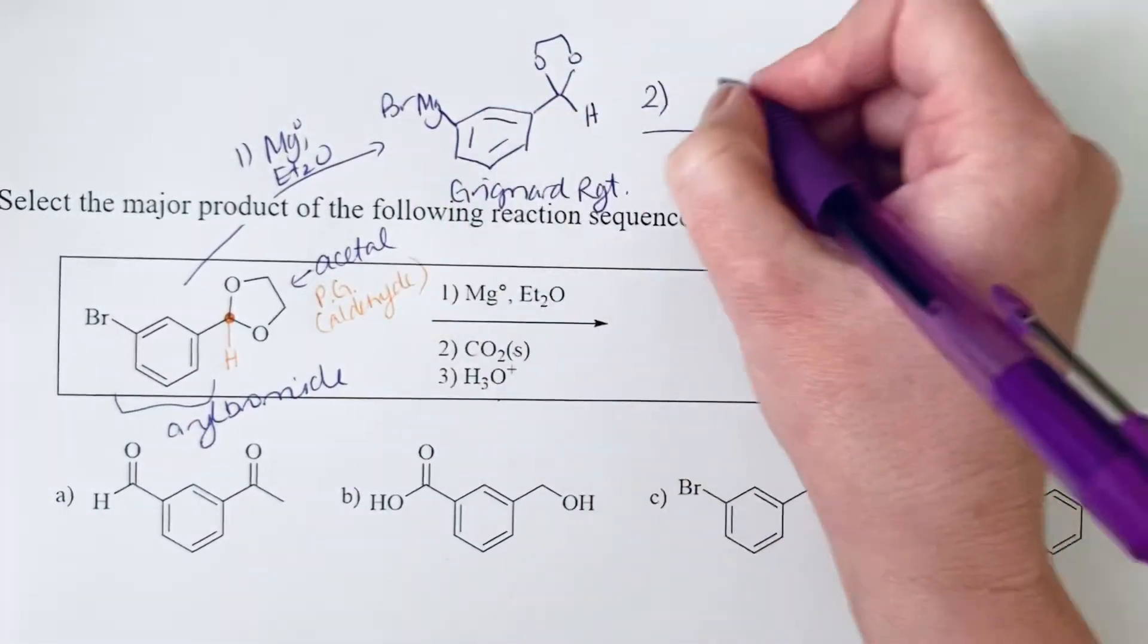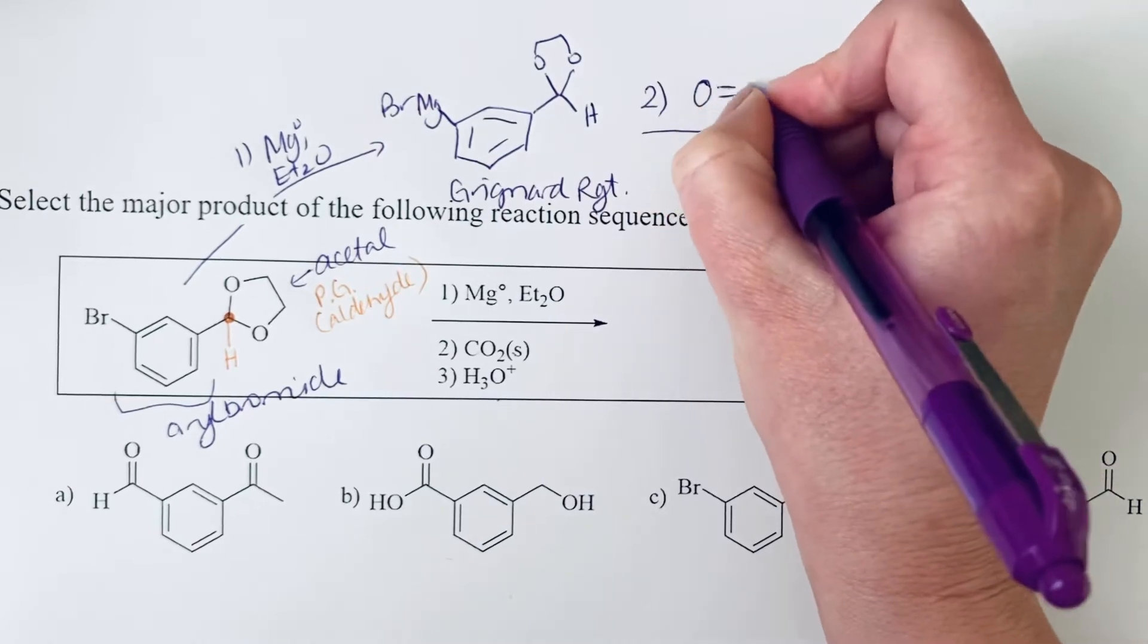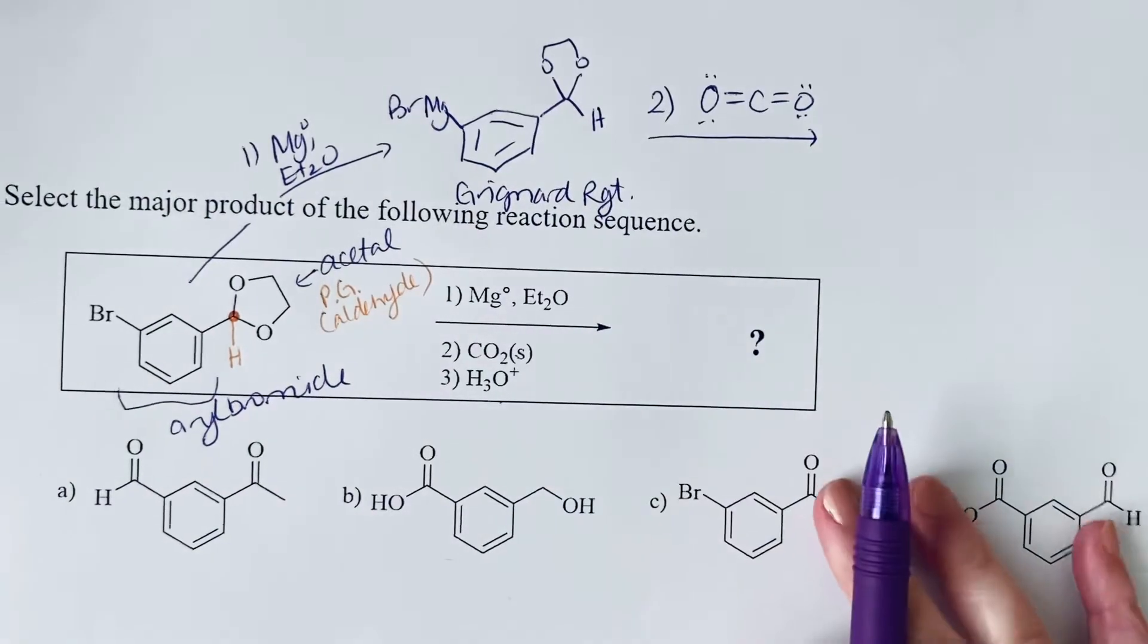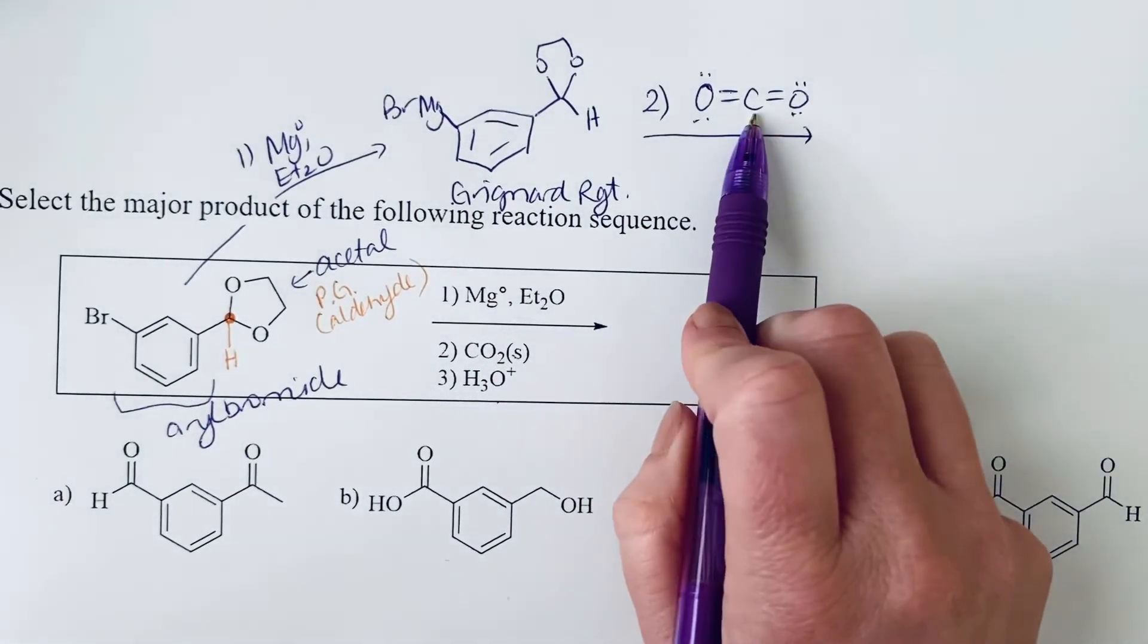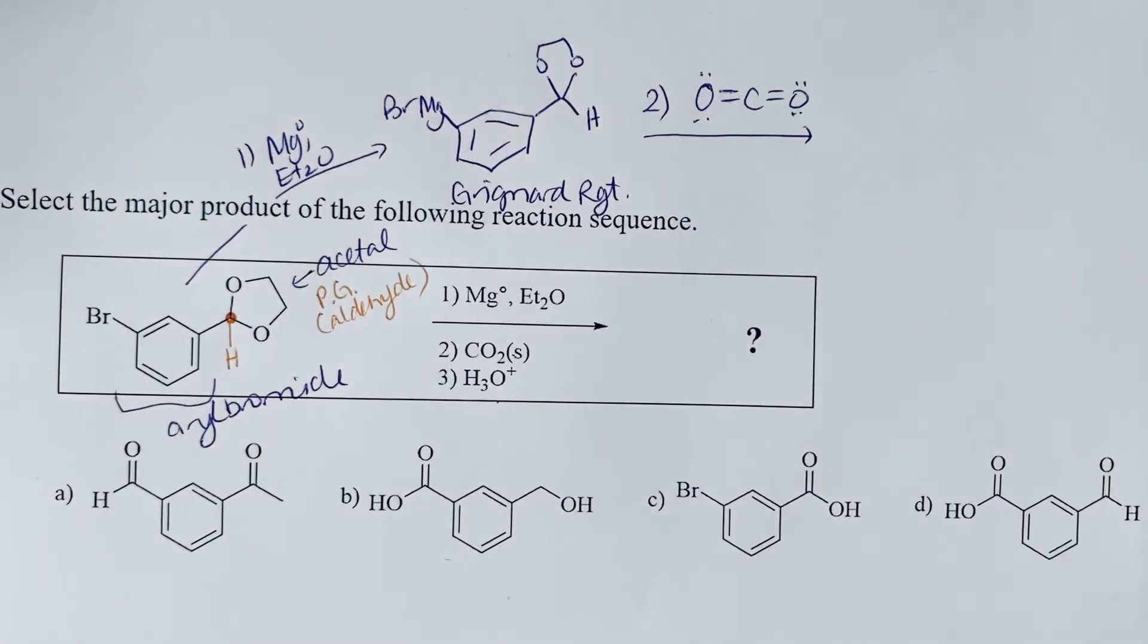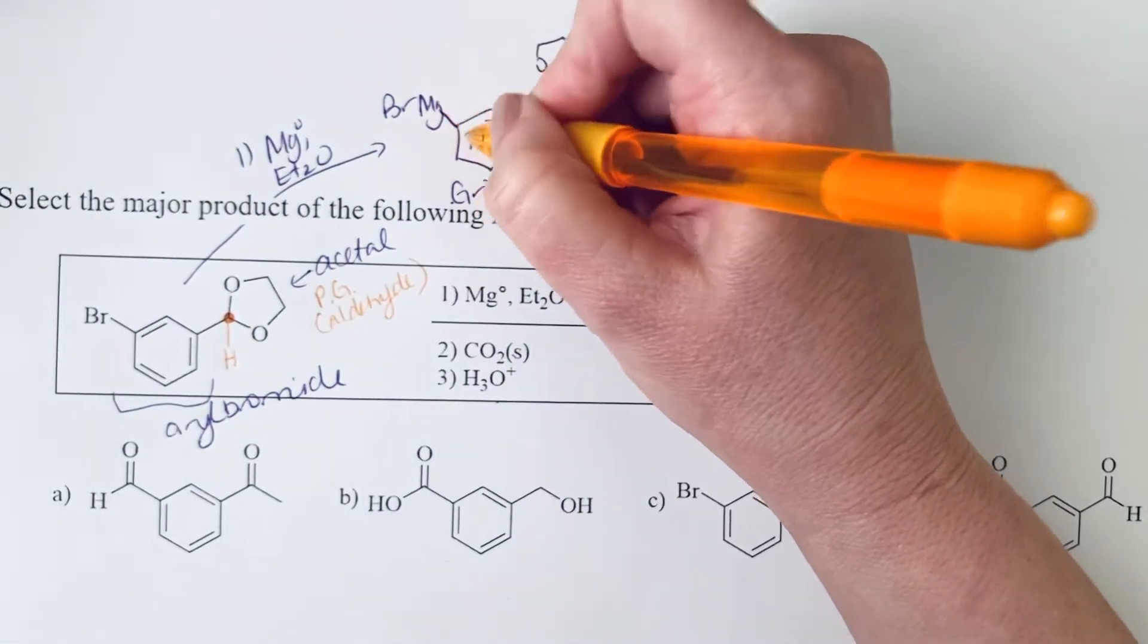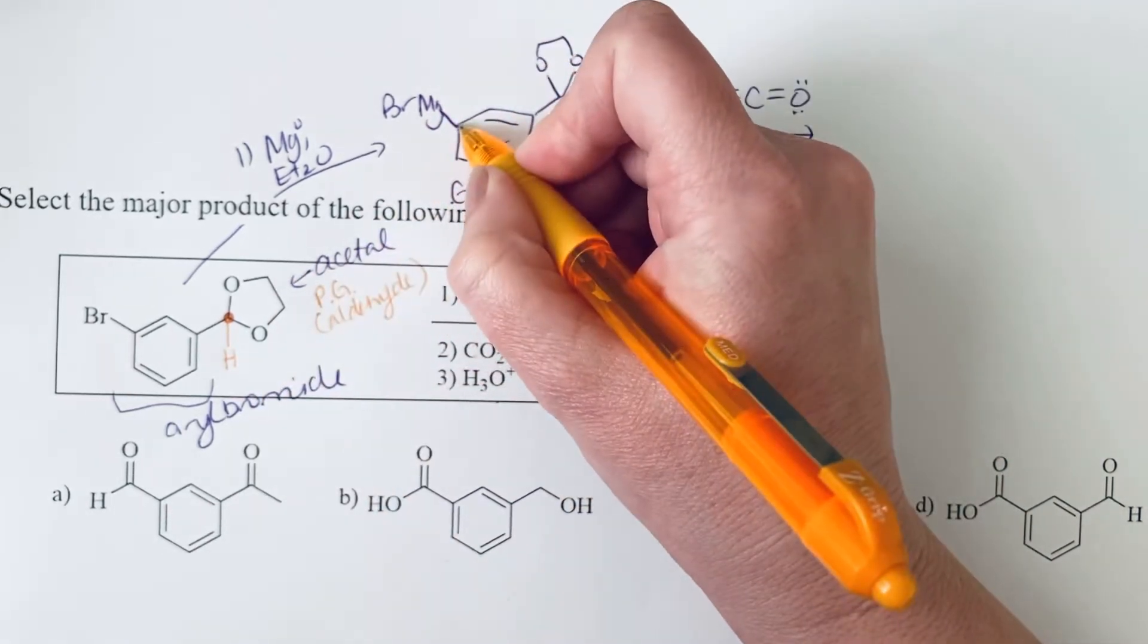And the second step here, we're going to take this Grignard reagent that we just formed and we're adding solid carbon dioxide, otherwise known as dry ice. And so we can do the addition of a Grignard to the carbon of carbon dioxide the same way we've seen it add to other carbonyl compounds.